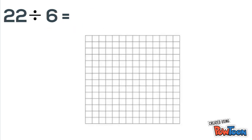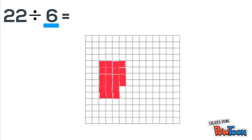Next, let's do 22 divided by 6 using an area model. We're dividing by 6, so I know I need to count by 6s. So 6, 12, 18, and then 19, 20, 21, 22.